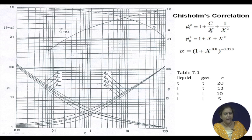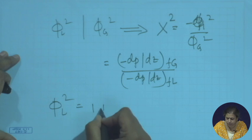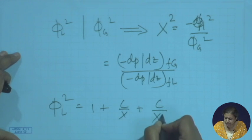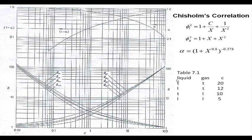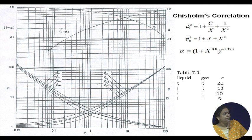Subsequently, Chisholm developed an analytical expression for φ_l² as a function of X and an empirical constant C. Different values of C are proposed depending on whether the liquid and gas are in turbulent or laminar flow. The combination of liquid turbulent and gas laminar is usually very rare; for two-phase flow in micro channels we often encounter both liquid and gas laminar, where C equals 5, or liquid laminar and gas turbulent, where C equals 12.